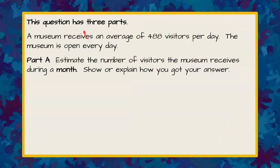Here's our question. Our question today has three parts. A museum receives an average of 488 visitors per day. The museum is open every day. Here's part A. Estimate the number of visitors the museum receives during a month. Show or explain how you got your answer.